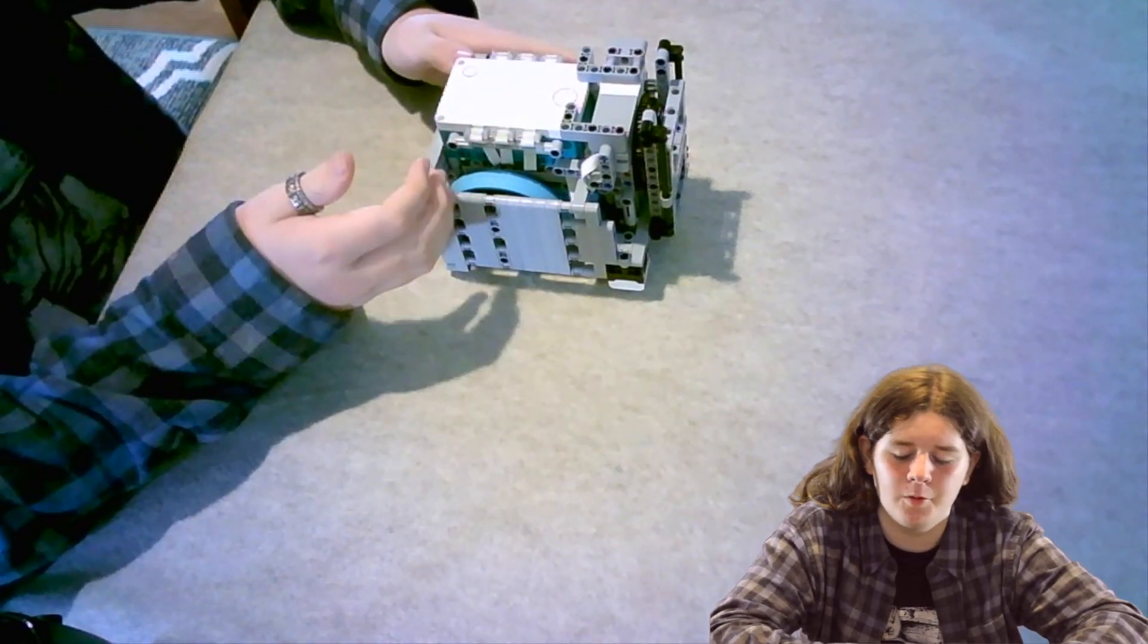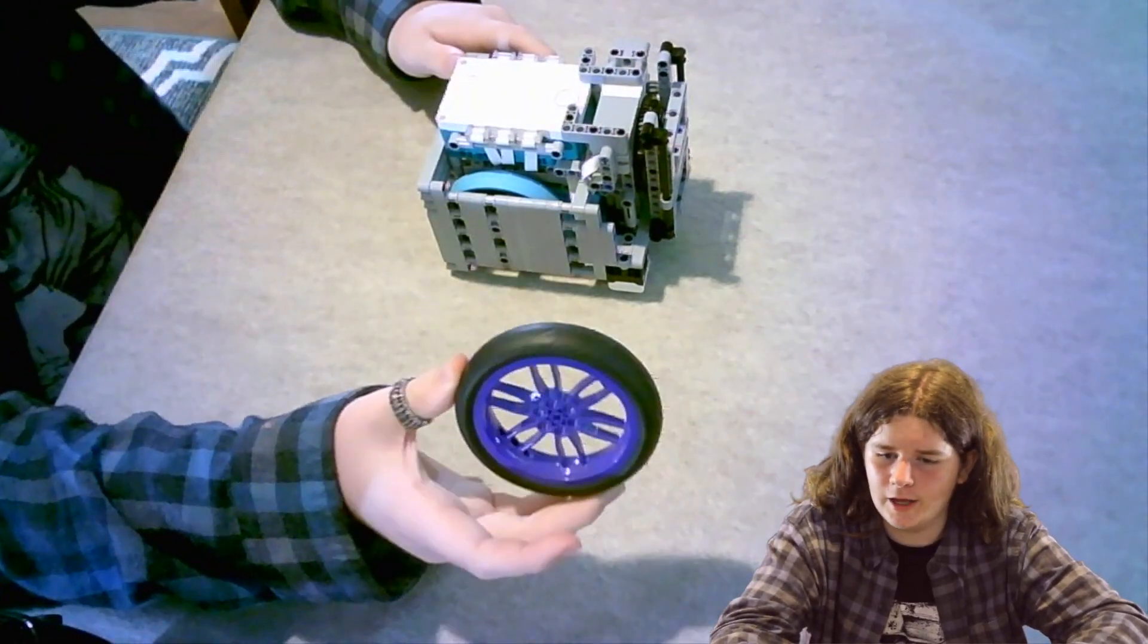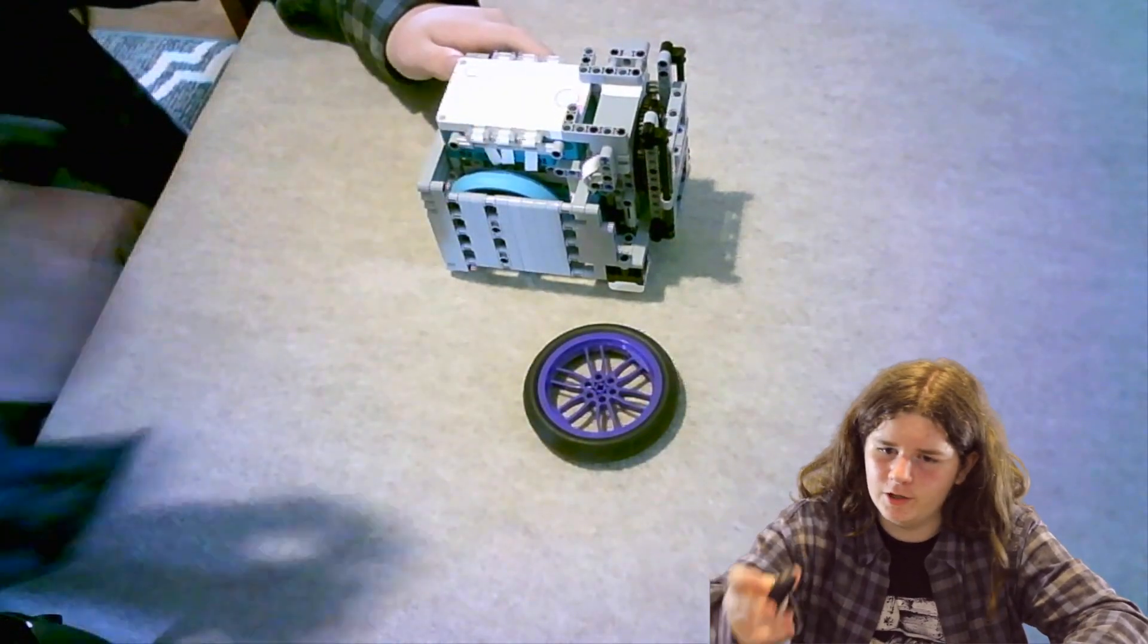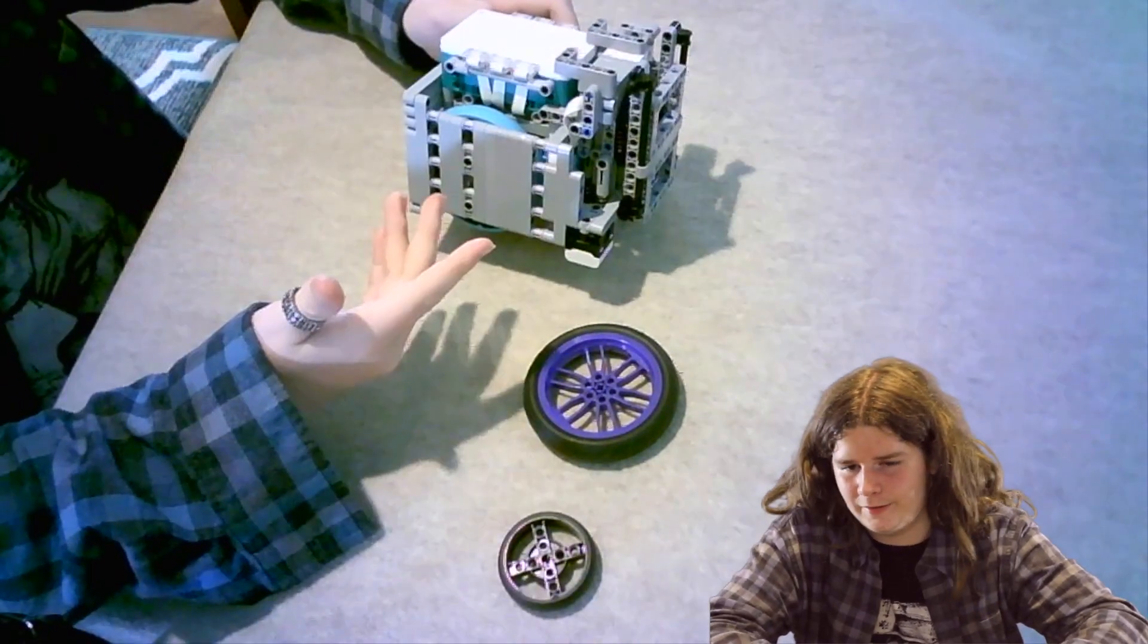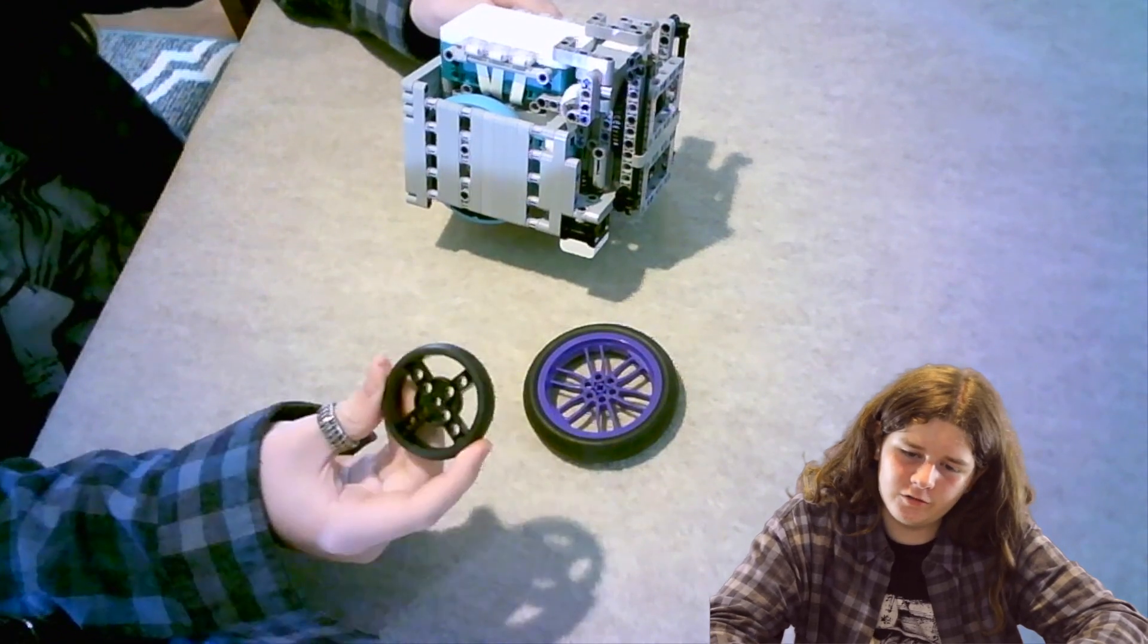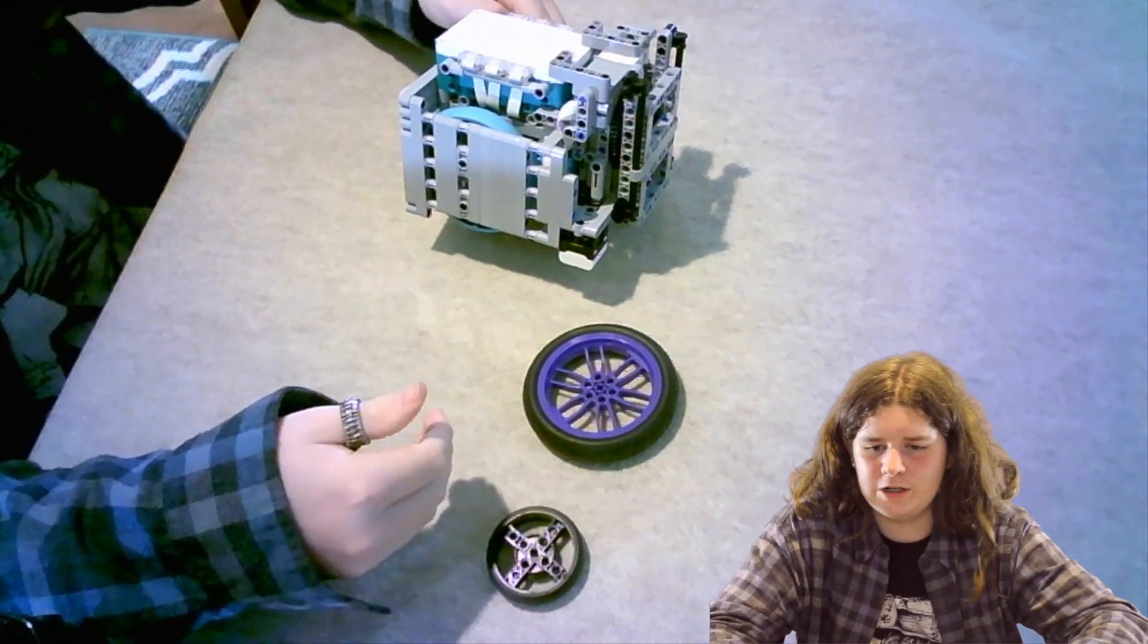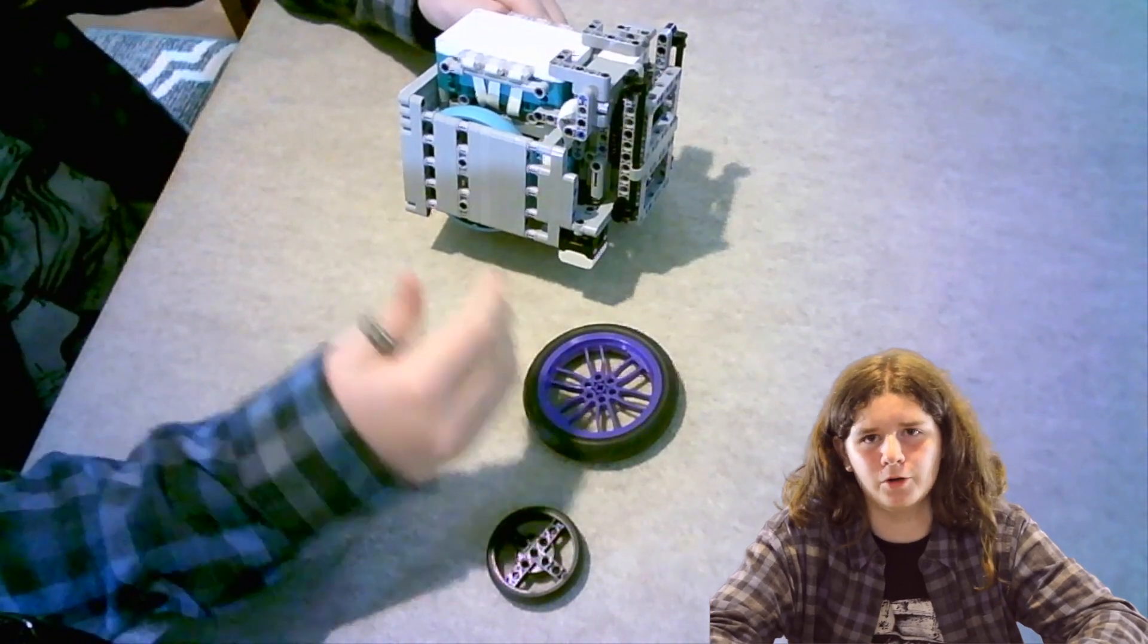Another thing that gives our robot an advantage over others would be our choice of wheels. We used to use this wheel and we considered using this wheel but we wound up using this wheel in the end. The reason we choose this wheel over others is because this wheel is just too small. The wheels we use are big which gives us more movement per rotation. We move further along the mat per rotation of the motor.